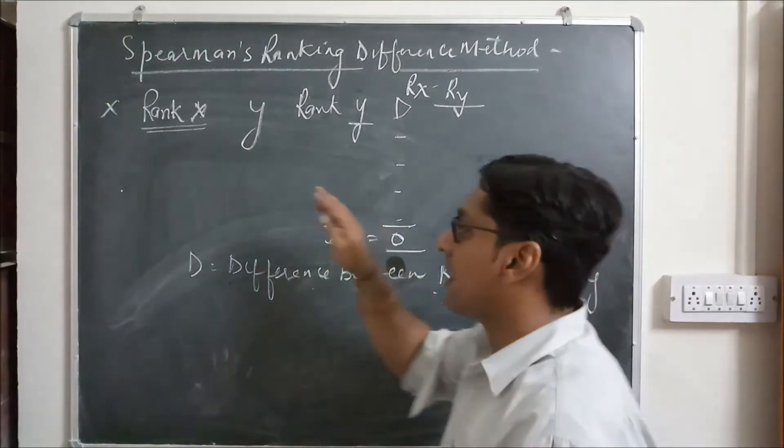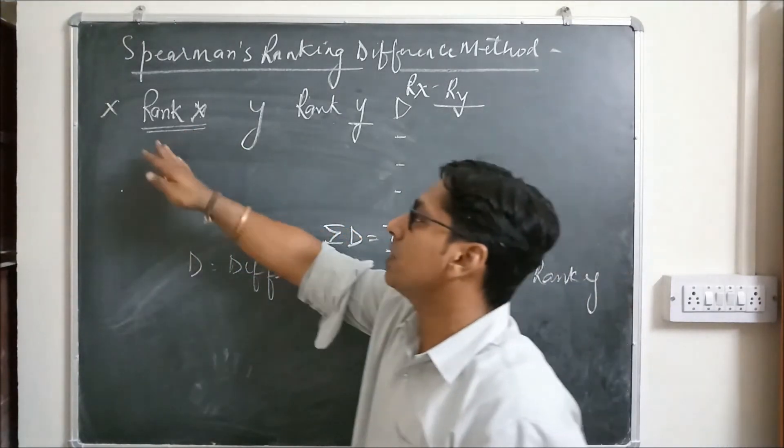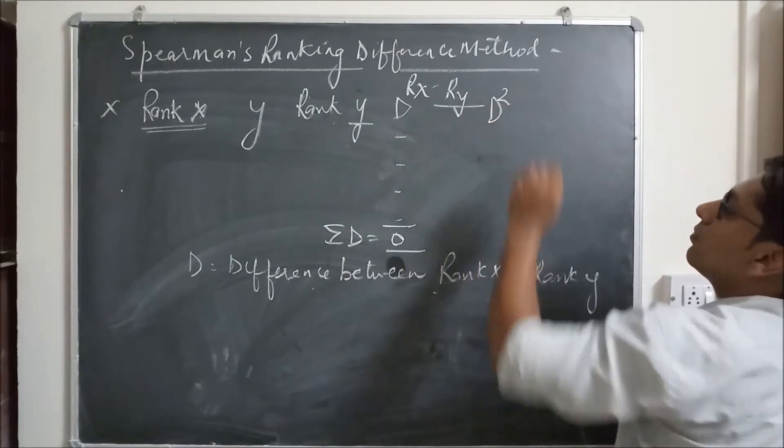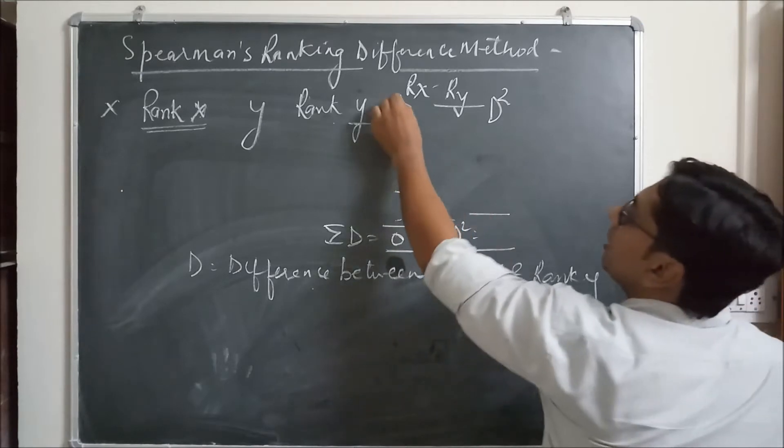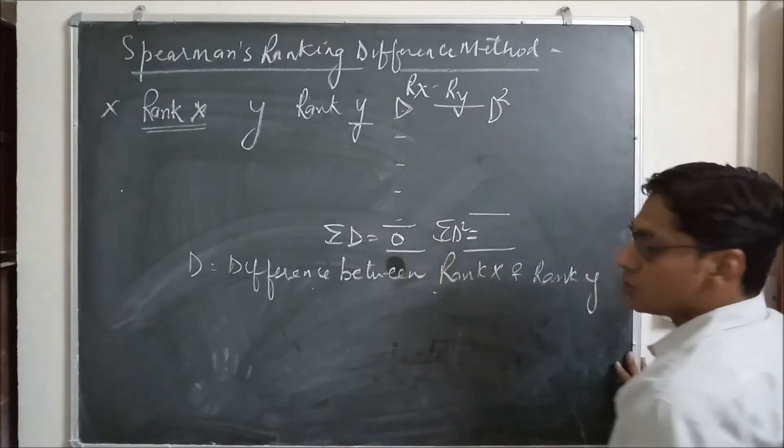Remember, always the sum of D should be 0. It indicates that the rank is given correctly. After this, you have to square D and sum up sigma D square.